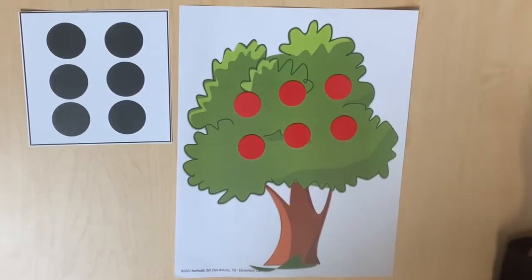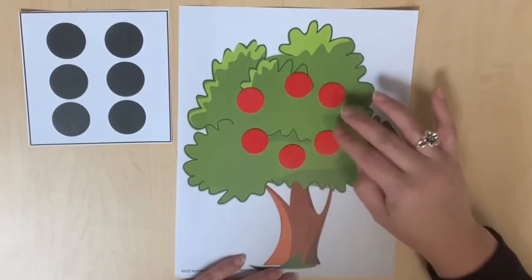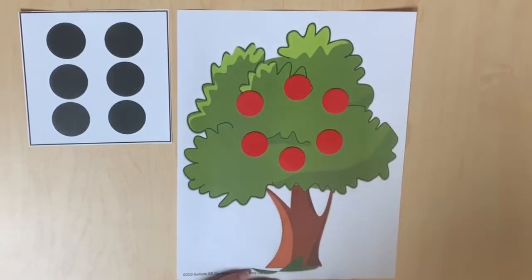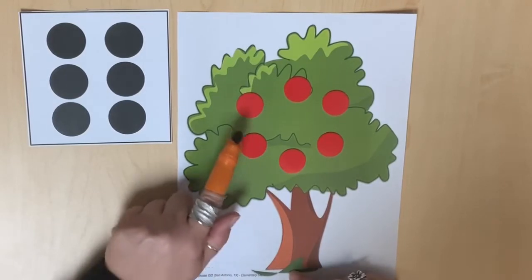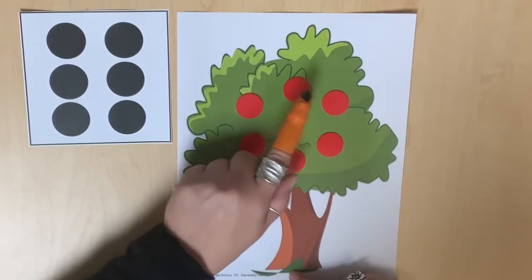After counting the set, students should count forward again but begin at a different counter: 1, 2, 3, 4, 5, 6.